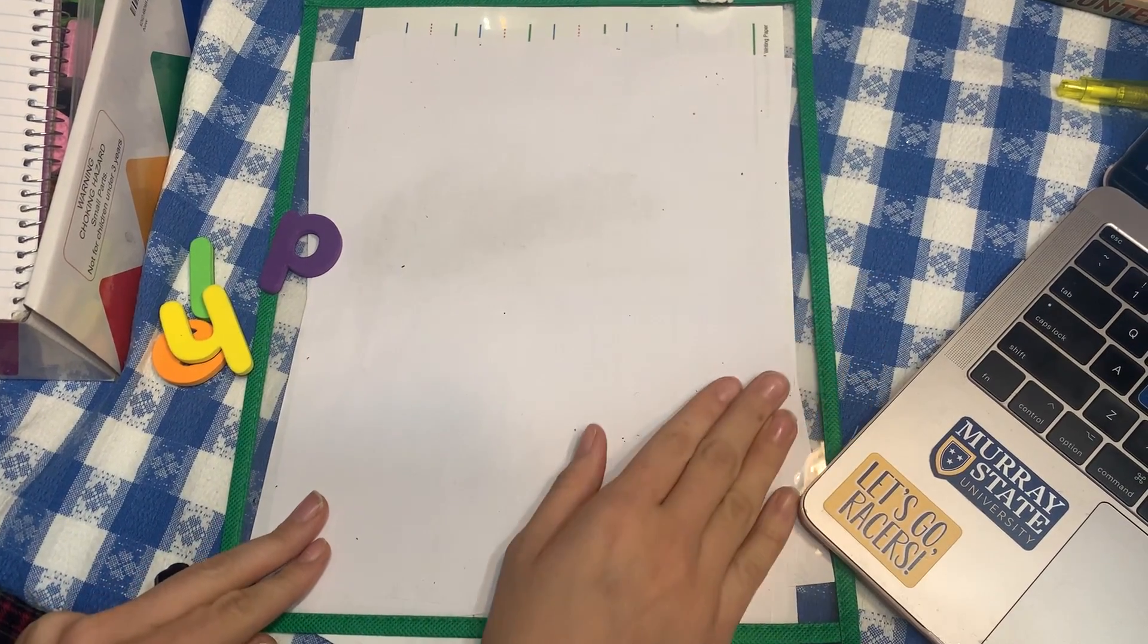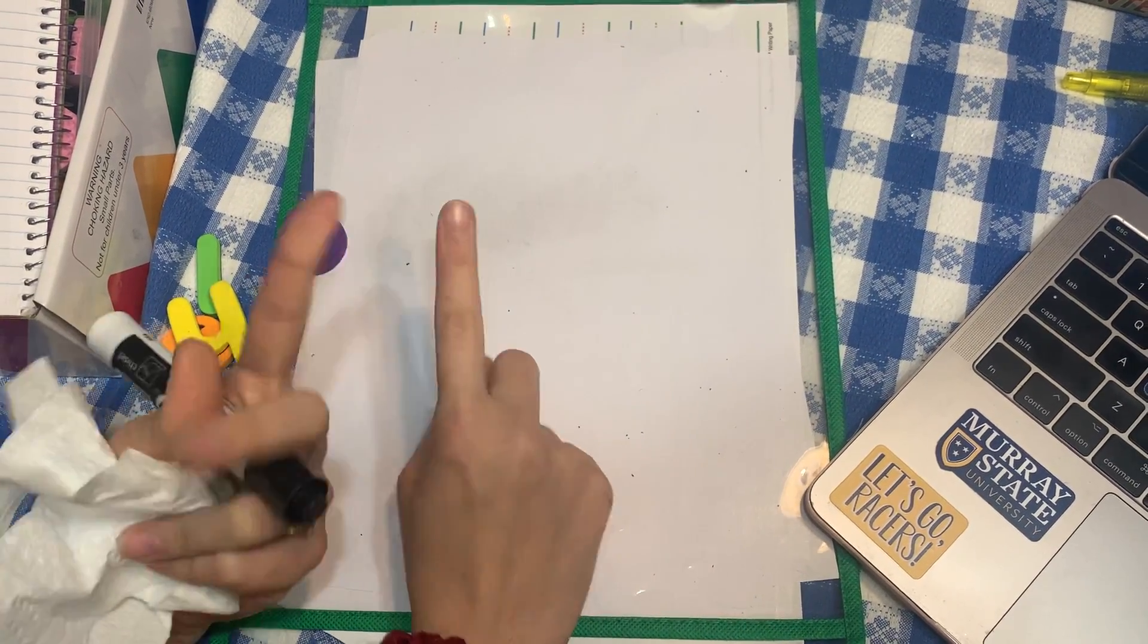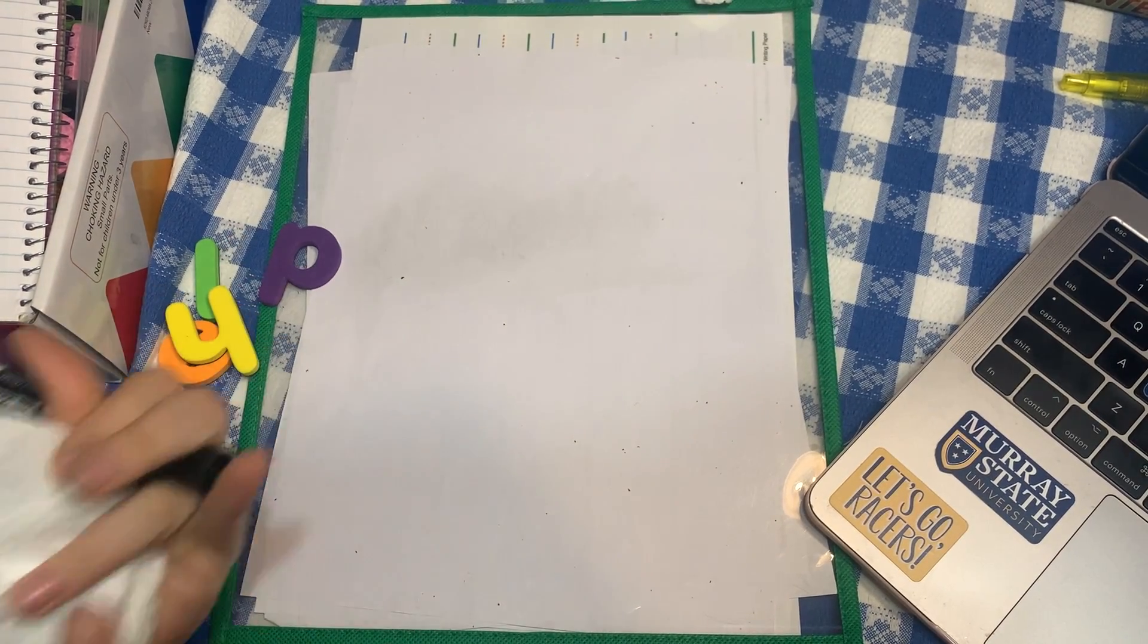Here's the activities you're going to do in order: What's missing, mix and fix, table writing, and then you retrieve it.